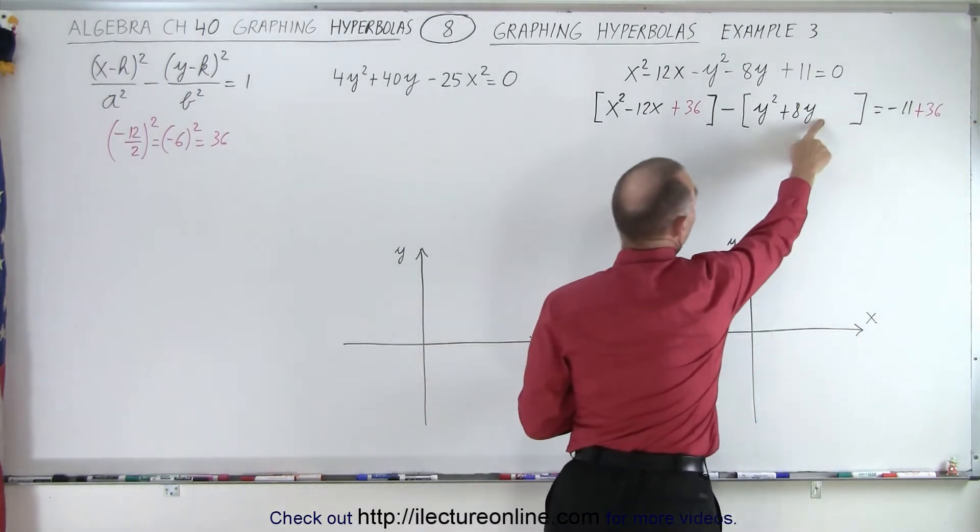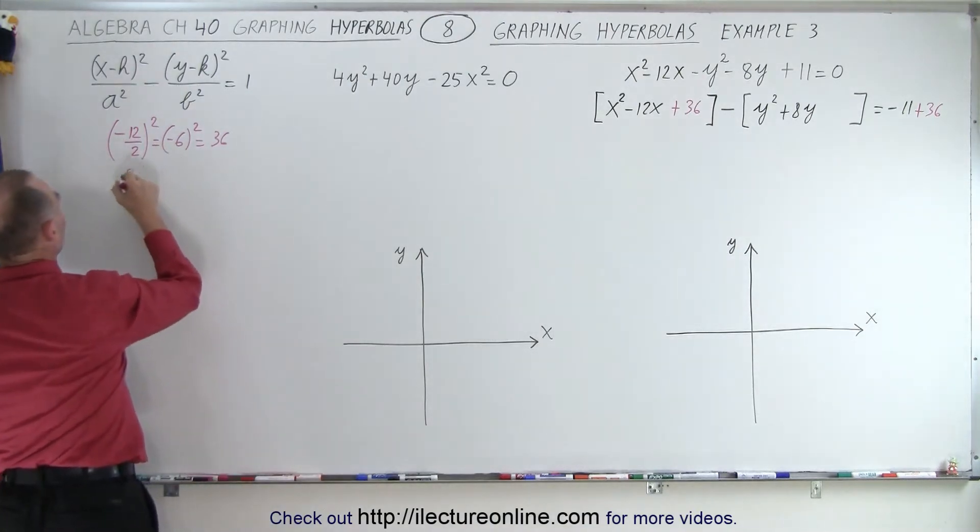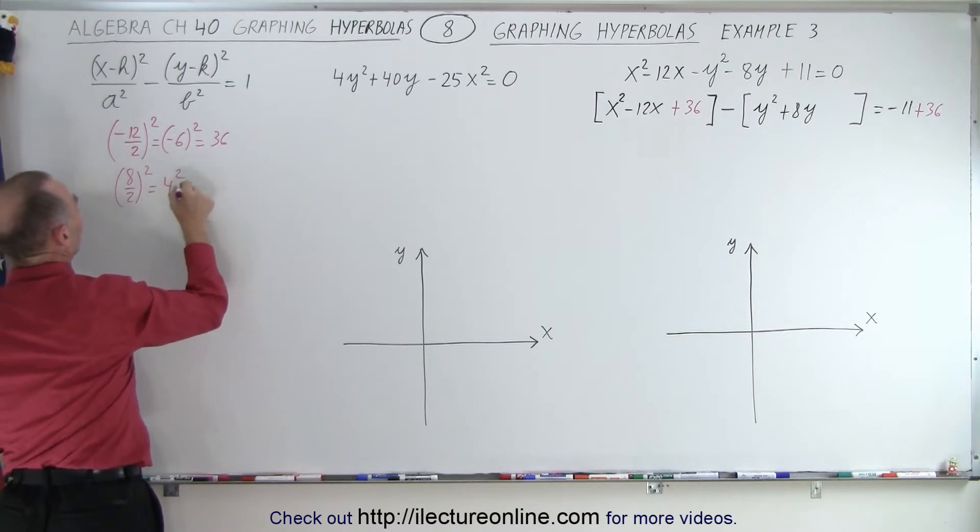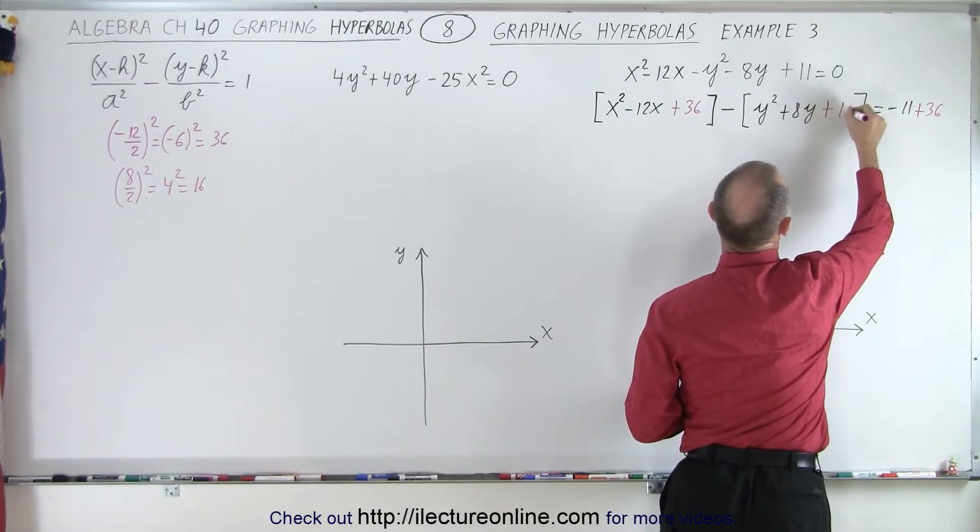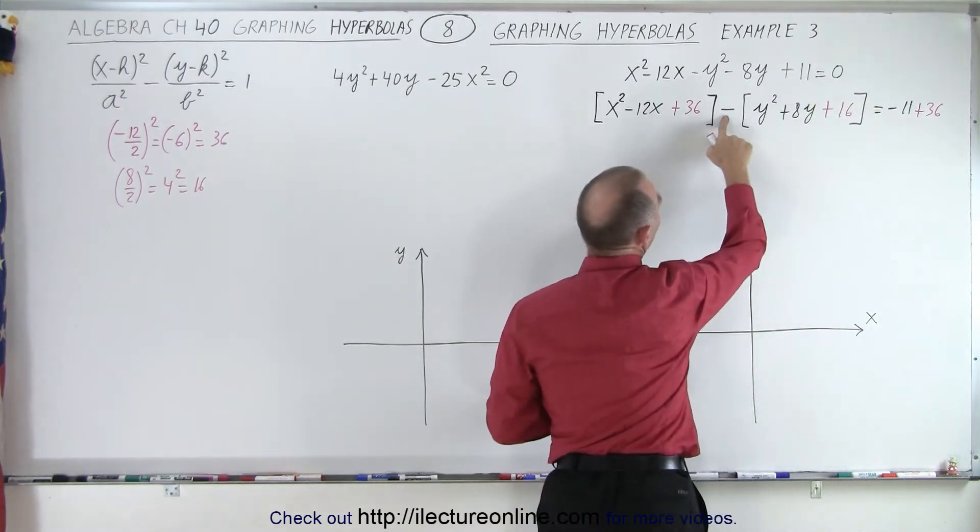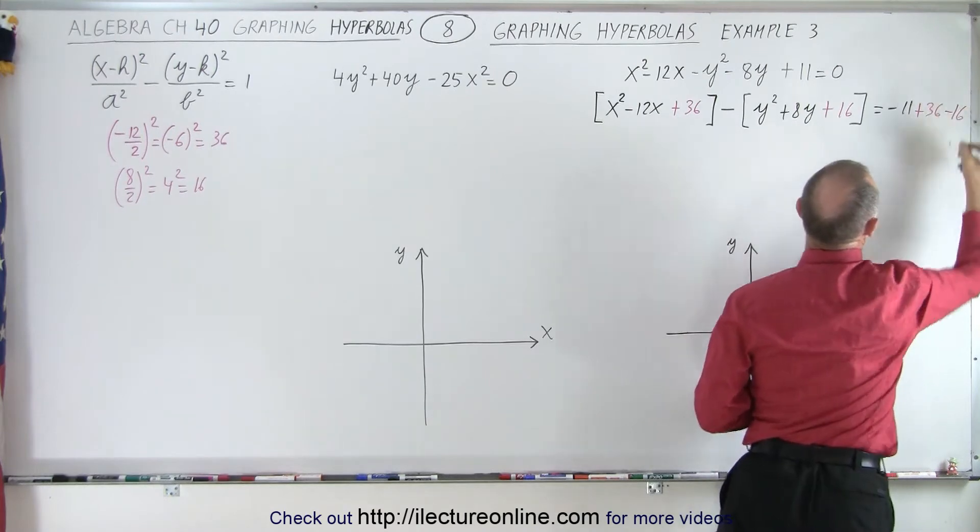We need to do the same over here. We're going to take the middle term, 8, divide that by 2 and square it. So that's 4 squared, which is 16. That means we want a 16 added over here. So plus 16. But notice with this negative sign over here, that's actually a negative 16. So we have to subtract 16 from that side as well.